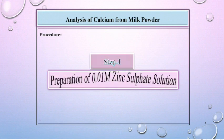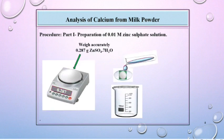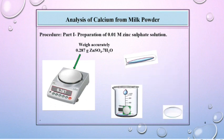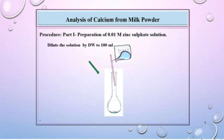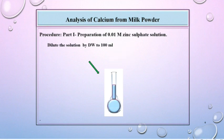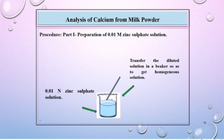Step 1 is preparation of 0.01 molar zinc sulfate solution. For that, weigh accurately 0.287 gram of zinc sulfate, then transfer this weighed quantity into a beaker and wash the watch glass and dissolve it in a minimum amount of water. Stir it well, then transfer this diluted zinc sulfate to a 100 ml volumetric flask and dilute it up to the mark using distilled water. Transfer the diluted solution into a beaker to get a homogeneous solution. This is the 0.01 normal zinc sulfate solution.